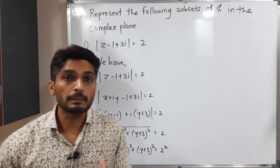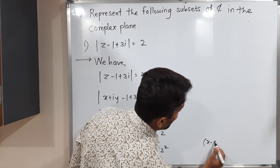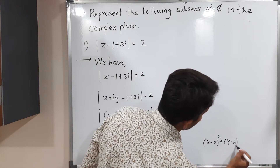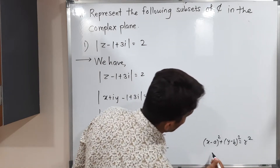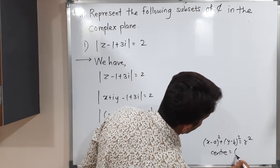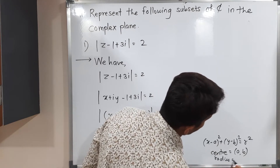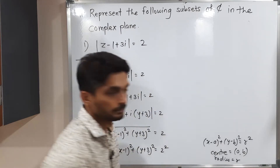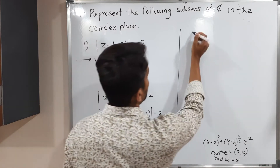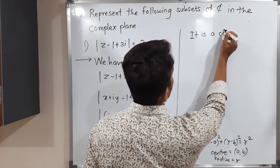This represents an equation of a circle. You know that if you have (x − a)² + (y − b)² = r², then this is a circle with center (a, b) and radius r. So this equation also represents a circle.